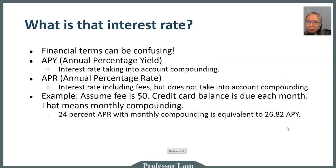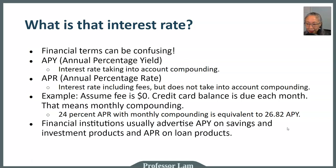When you have a compounding frequency that is more frequent than once per year, the APR and the APY — the annual percentage rate and the annual percentage yield — are different. So a 20% APR is equivalent to a 26.82% APY. Financial institutions typically advertise APY on savings and investment products such as CDs and savings accounts, and they'll advertise APR on loan products.